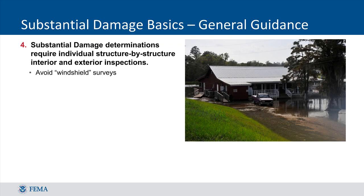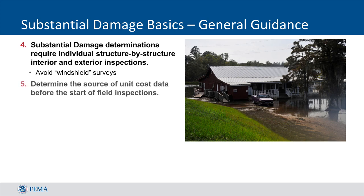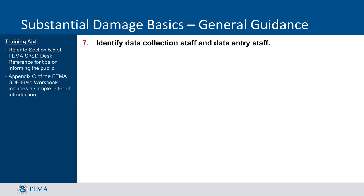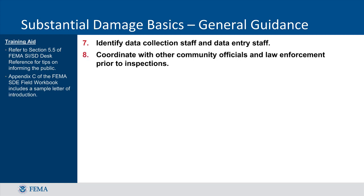After the initial survey is done, preparation for fieldwork can begin. It is required to perform individual structure-by-structure interior and exterior inspections when making full substantial damage determinations. The source of unit cost data will need to be determined before field inspections are started. Before starting fieldwork, review the data collection requirements and property access procedures. Data collection and data entry staff should be identified early on in fieldwork preparation. Coordinate with community officials and law enforcement prior to inspections, which can save time by explaining the purpose of the inspections and discussing the schedule of areas to be inspected.